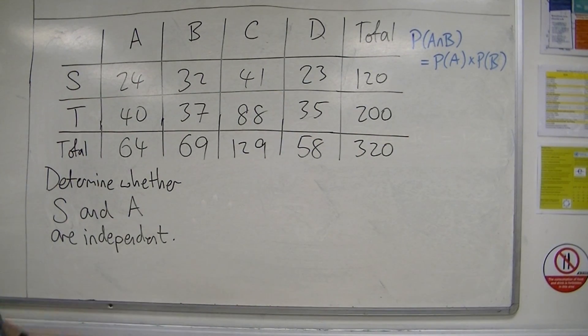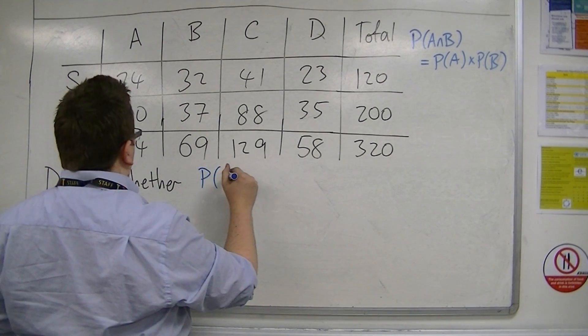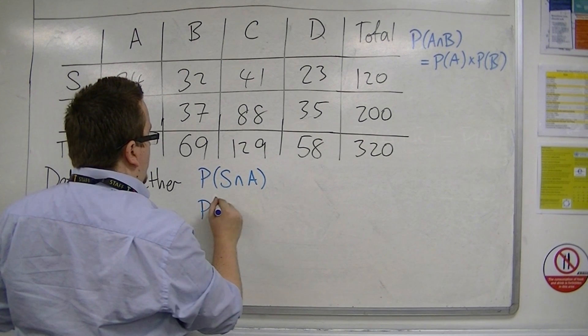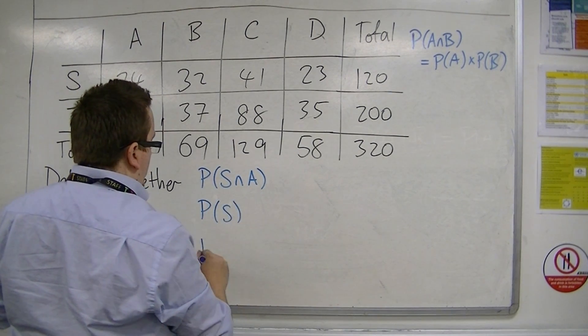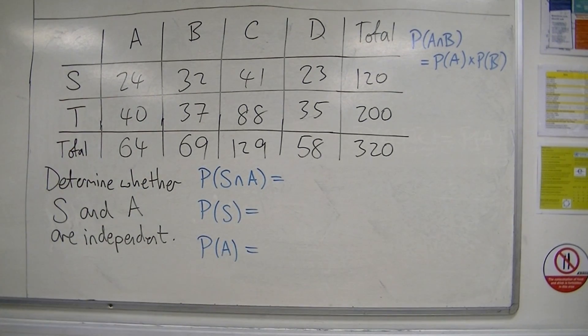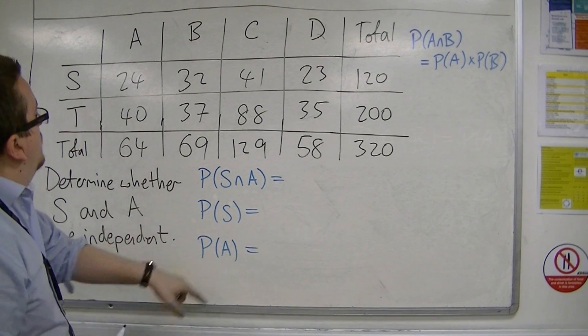So what I need is the probability of S intersection A, the probability of S, and the probability of A. Let's work from the ground up.